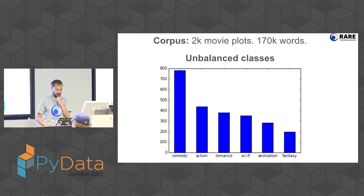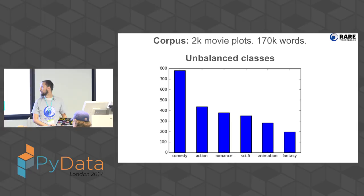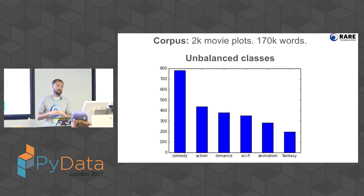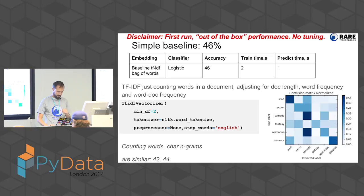The main problem with this dataset is that it's unbalanced — most things are comedy, out of 2,000 movie plots. Another problem is it's small: 170K words is really small. 500K words is the minimum you need to run a decent Word2Vec model. 200,000 words is quite small — that's the problem. But for something to run on your laptop right here, it should be okay.